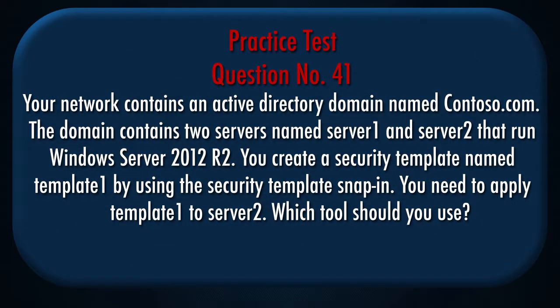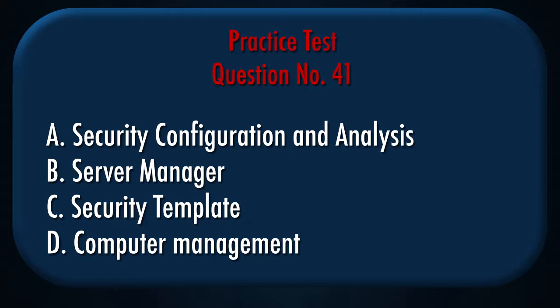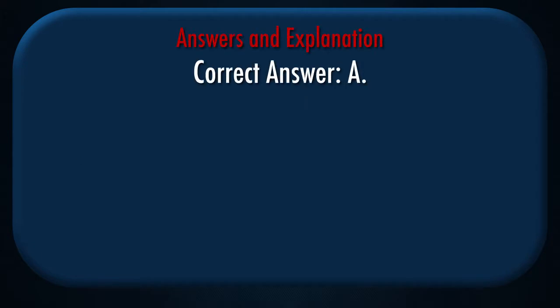Question number 41: Your network contains an Active Directory domain named Contoso.com. The domain contains two servers named Server1 and Server2 that run Windows Server 2012 R2. You create a security template named Template1 using the Security Template snap-in. You need to apply Template1 to Server2. Which tool should you use? A. Security Configuration and Analysis. B. Server Manager. C. Security Template. D. Computer Management. Correct answer: A.